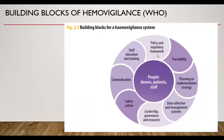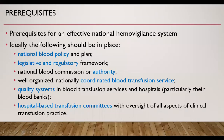These are the building blocks of Hemovigilance: a policy and regulatory framework, emphasis on traceability, planning and implementation strategy, data collection and management, leadership, governance and resources, safety culture, a proper communication system, and provision for staff education and training. The prerequisites for an effective national Hemovigilance system according to WHO include: a national blood policy and plan, a legislative and regulatory framework, a national blood commission or authority, a well-organized and nationally coordinated blood transfusion service, quality systems in blood transfusion services and hospitals — particularly blood banks — and a hospital-based transfusion committee with oversight of all aspects of clinical transfusion practice.